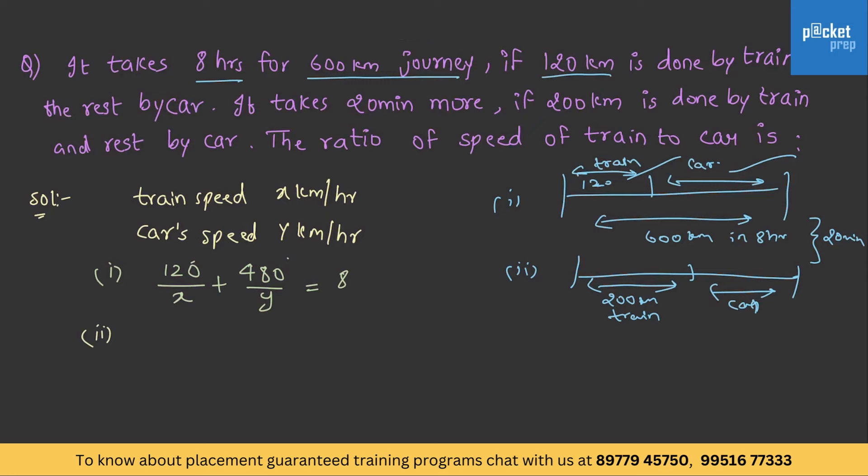In the next scenario, it is 200 by x plus 400 by y is equal to 25 by 3. That is, it is taking 20 minutes more.